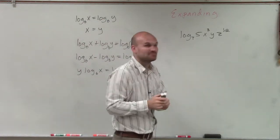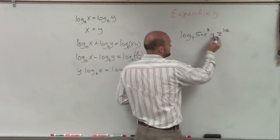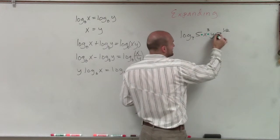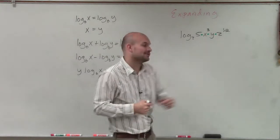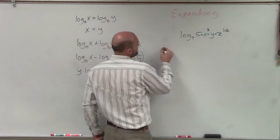So you see here, we have the product of a couple of terms. We have 5 times x cubed times y times z to the negative 1 half. So what I can do is I can break these up into their own individual logarithm of base 7.